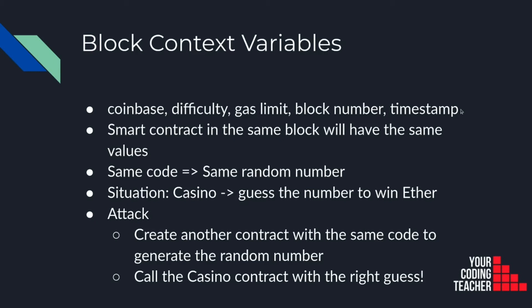Players, to win, have to try to guess the number that is going to be generated. If they send the right guess they are going to get some ether, otherwise they will lose their bet. To attack this contract, we could create another contract with the same code to generate the random number. We could go to this casino contract, read the source code, see how the random number is generated, and copy-paste that code into our contract. Then, since all the variables are the same, we're going to generate exactly the same number as the casino because we're running the same code with the same variables. Since we know which number is going to be generated, we can call the casino contract with the right guess and we can win every time.